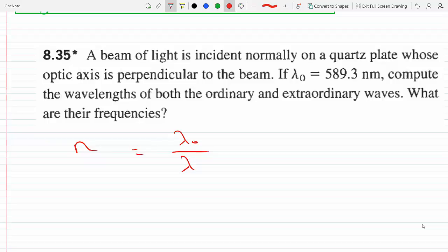Then we can get the wavelength of the ordinary wave to be λ₀ over n_o. So this is 589.3 nanometers, multiply it by 10 to the minus nine to change it to meters, divided by n_o. For the material that we have, n_o is 1.5443.